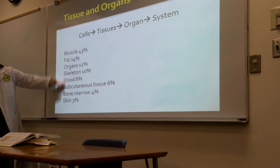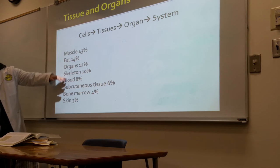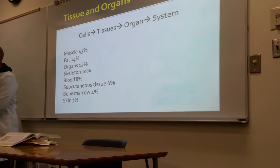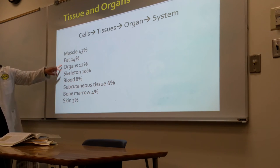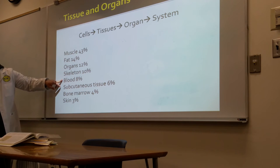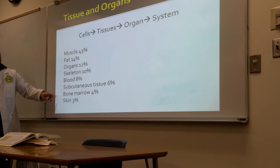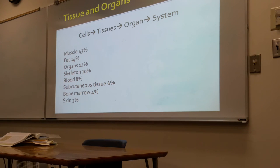We are composed of 43% muscle, 14% fat, 12% organs, 10% skeleton, 8% blood, 6% subcutaneous tissue, 4% bone marrow, and 3% skin.